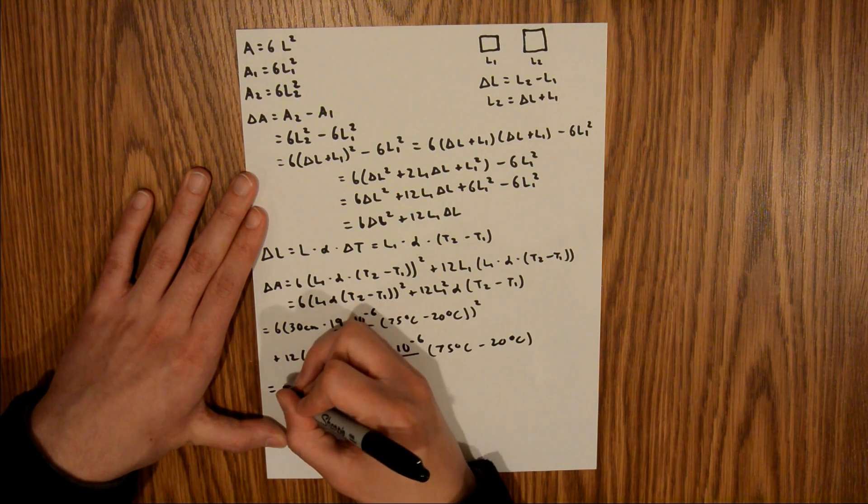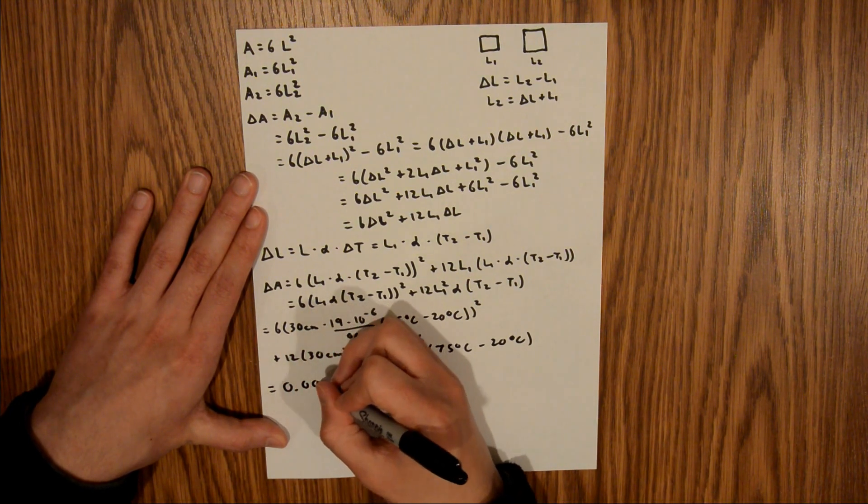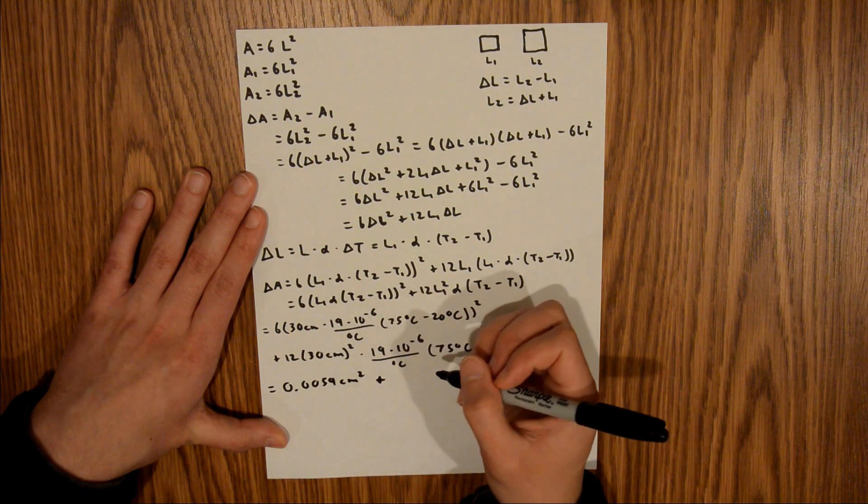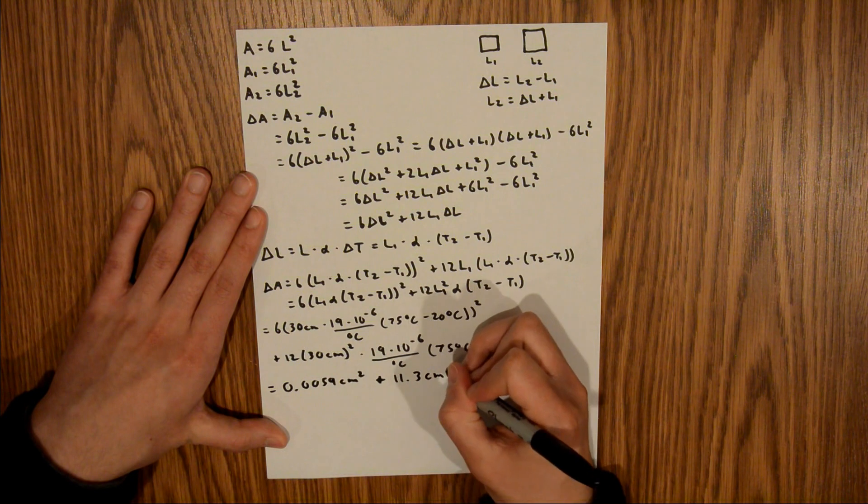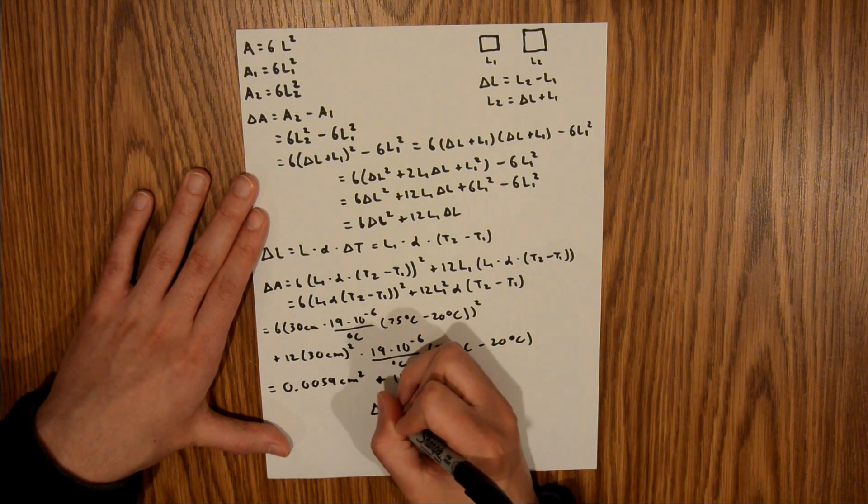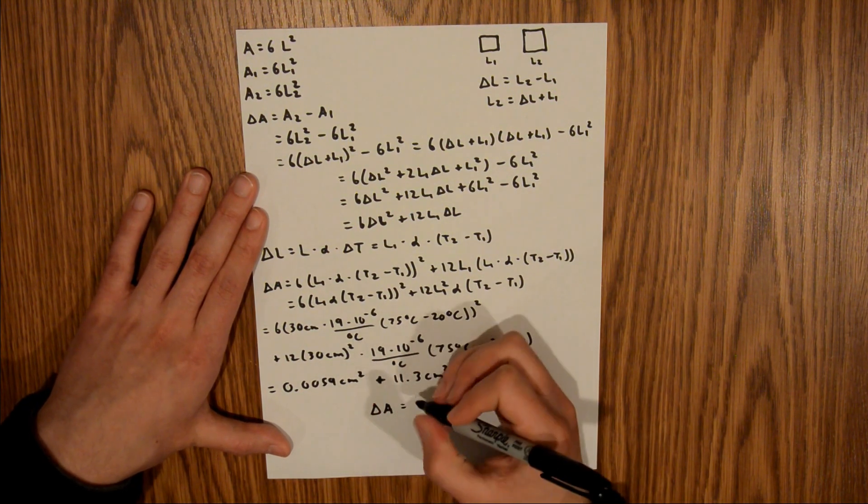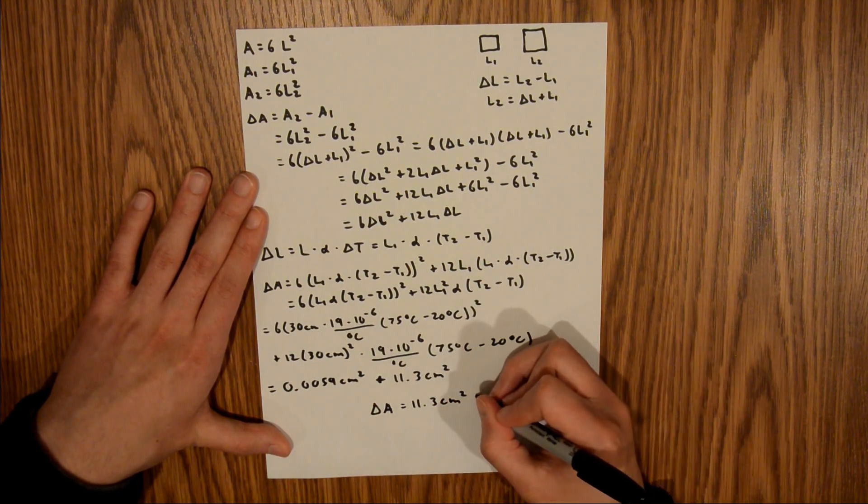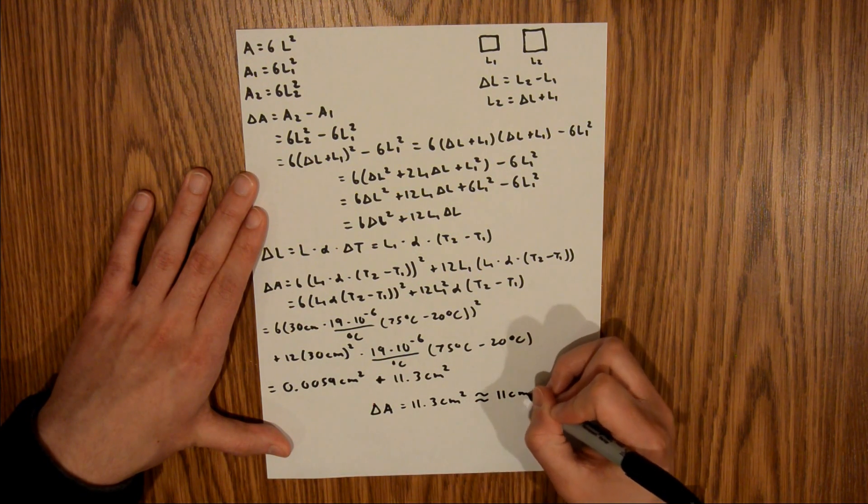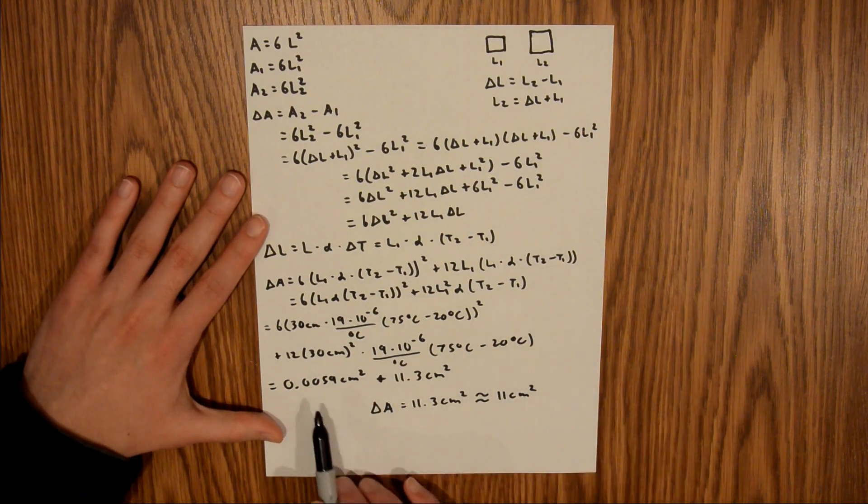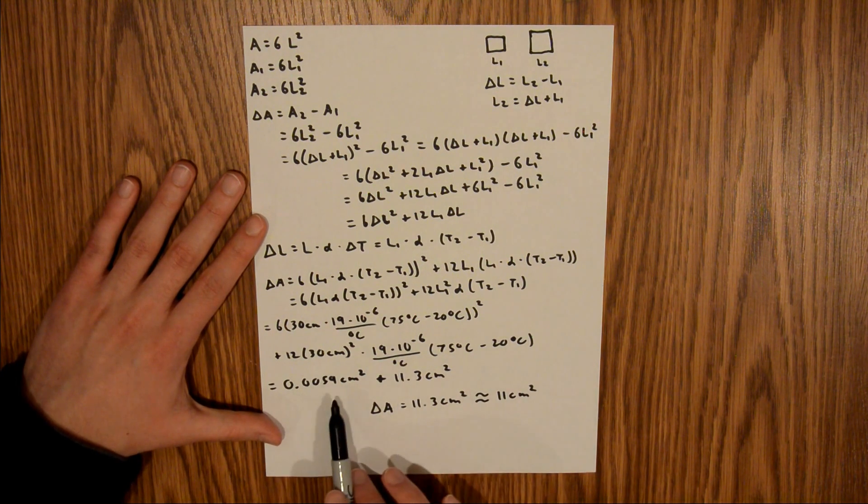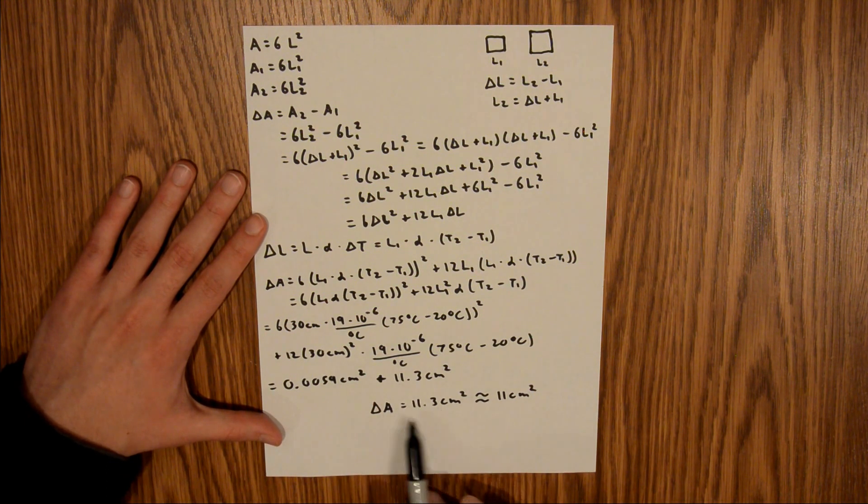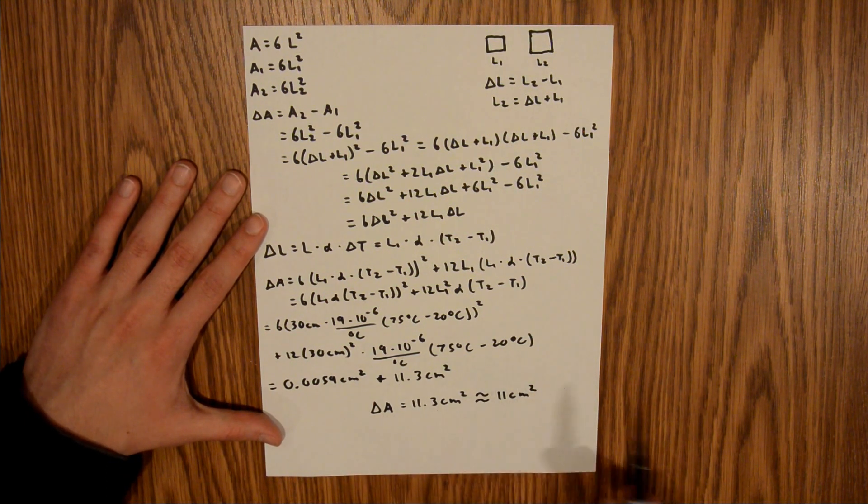Those two terms are equal to 0.0059 centimeters squared and 11.3 centimeters squared, respectively. If we add those together, our increase in surface area is equal to 11.3 centimeters squared, which if you decide to round it to two significant figures is 11 centimeters squared. The reason I showed both terms is to show that this term was much less than this term, to the point where it was insignificant for your final answer, even if you rounded to three significant figures instead of two.